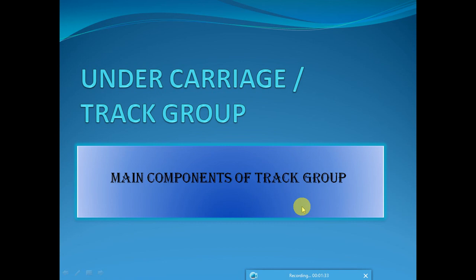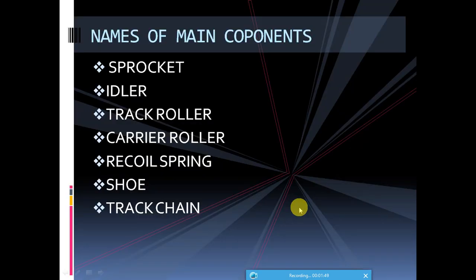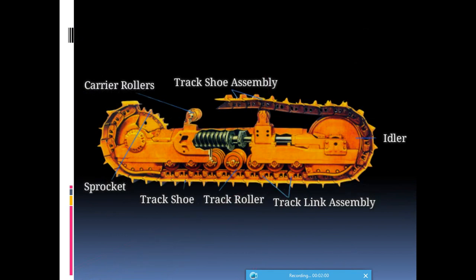Let's come to the main point. The main components of the track group are: sprocket, idler, track roller, carrier roller, recoil spring, shoe, and track chain. These are the main components.